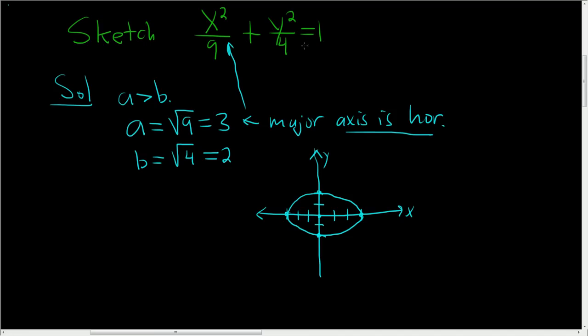If it was backwards, if the 9 was here instead, then you would go up and down by 3 instead of left and right.